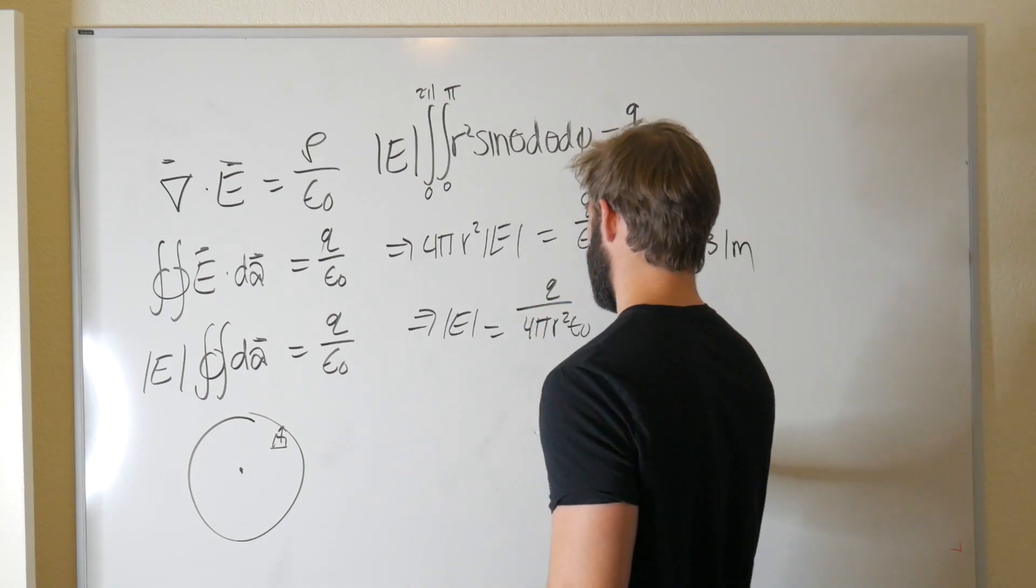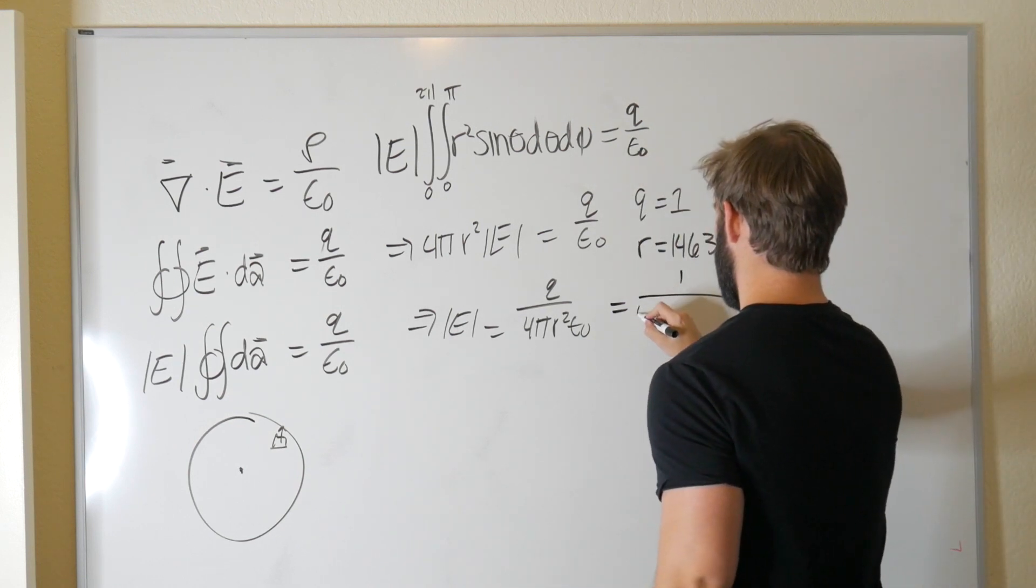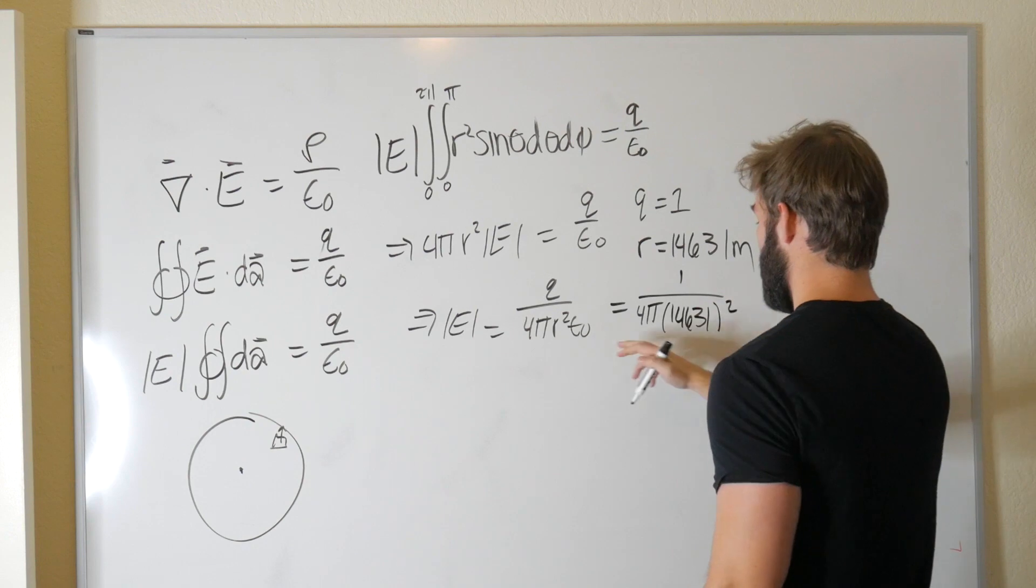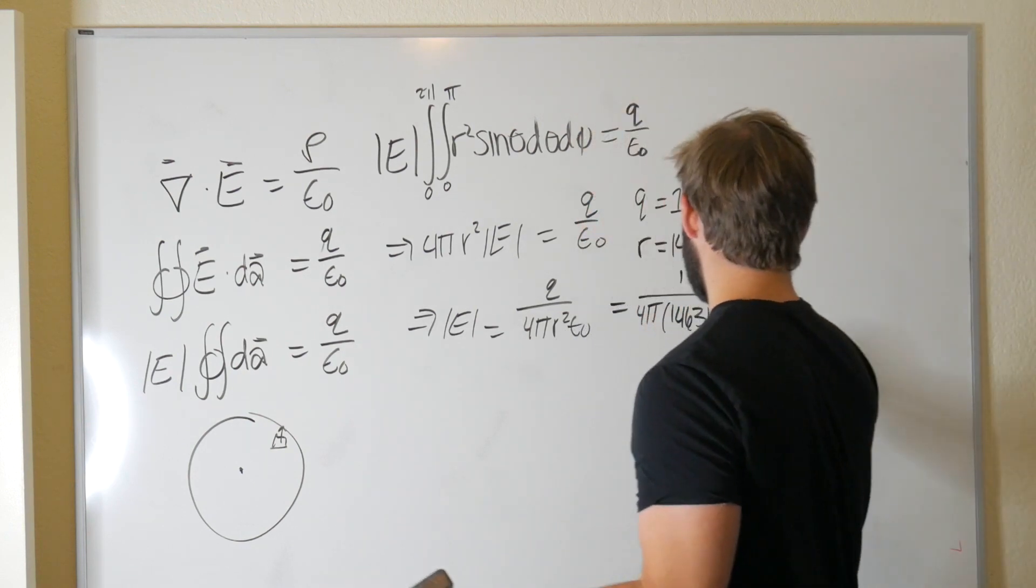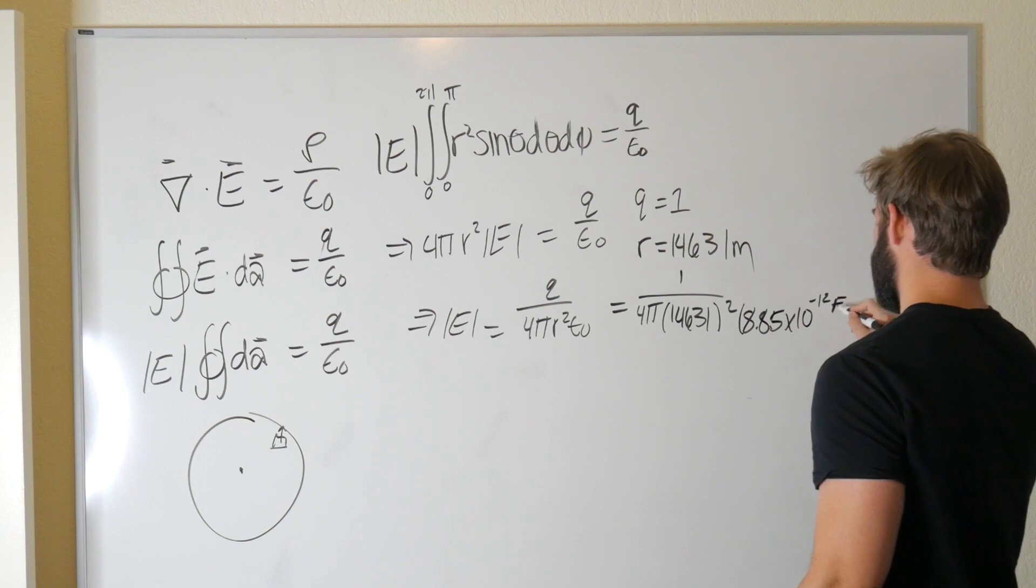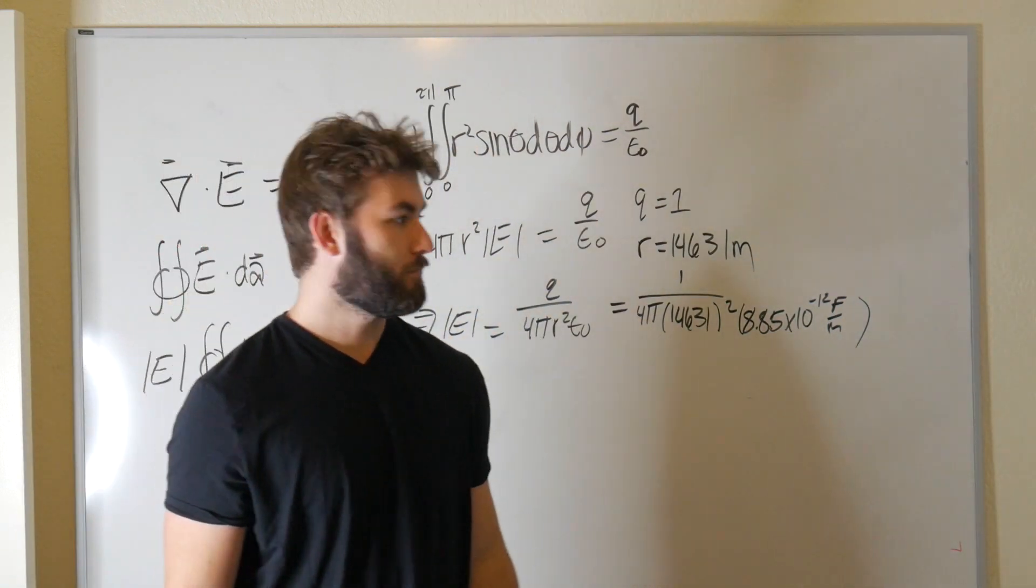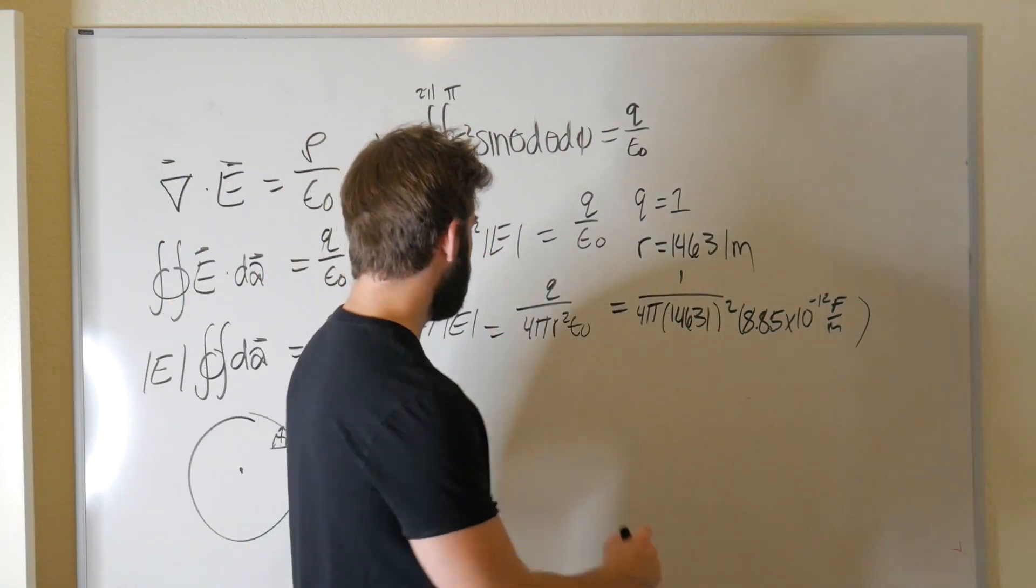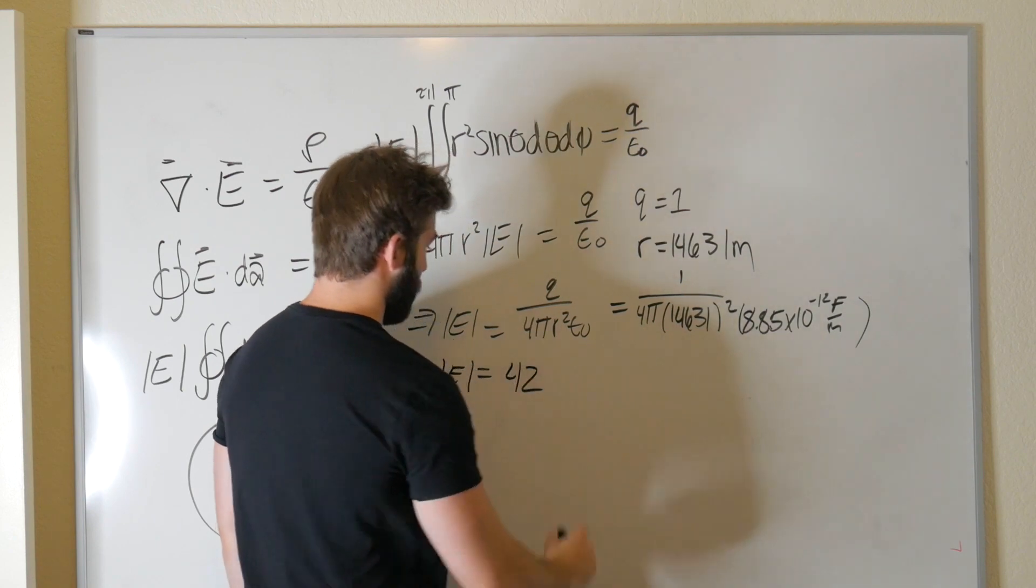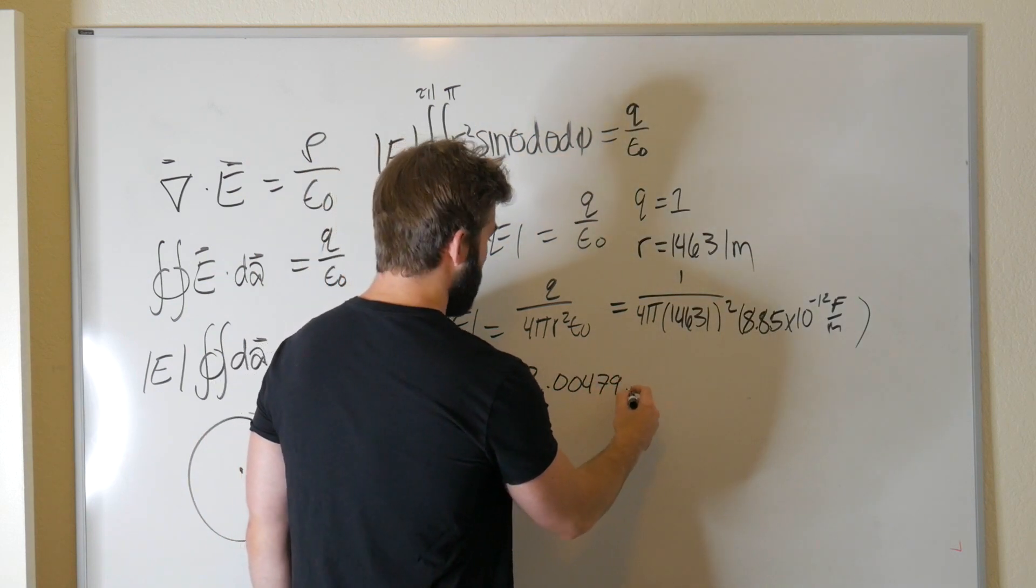And if we just go ahead and plug this in, we get that E is equal to Q, which is one, over four pi, we're going to say, so this is 14,631 squared, and then we're going to say that epsilon zero is about 8.85 times 10 to the minus 12 farads per meter. And just guess what we get when we play nature's own game. We get that E is equal to 42.00479 and other terms. But that is approximately 42.